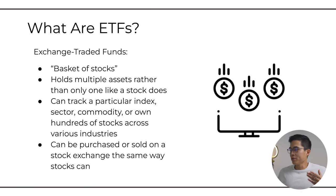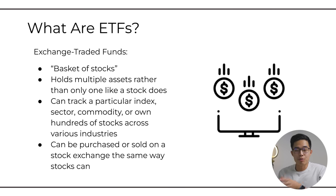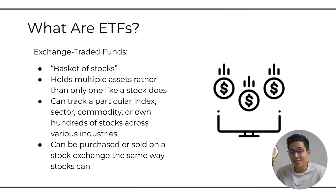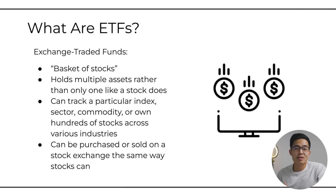Usually ETFs are going to track a particular index, a sector, or a type of commodity. The whole point is by buying one ETF, you're buying one basket full of different stocks or assets. A great thing about ETFs is that they can actually be bought or sold on a stock exchange just like normal stocks, so they are very easy to buy and sell. For example, let's say I really like tech stocks and I want to invest in multiple tech stocks all at once — one thing you can do is actually buy a tech ETF, and your money is essentially spread out over many different tech companies.